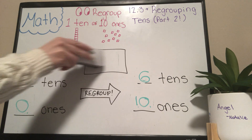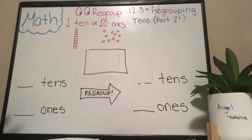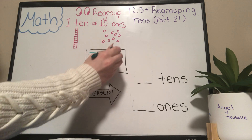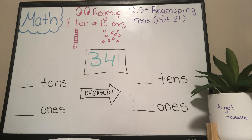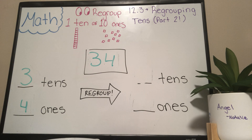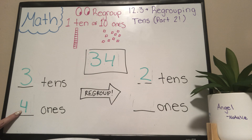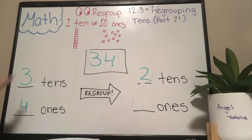We have two more and then the word problem at the bottom. Let's go ahead with the number 34. How many ones? Four ones. How many tens? Three tens. Take away one of these tens — three minus one is two. Four plus ten equals fourteen. There's your answer for this problem.